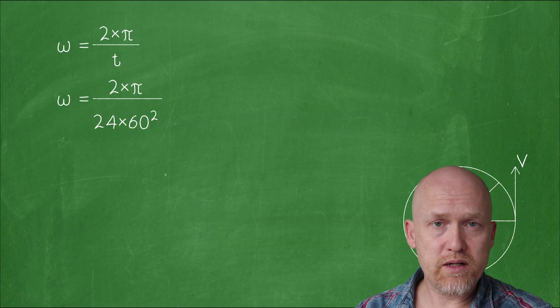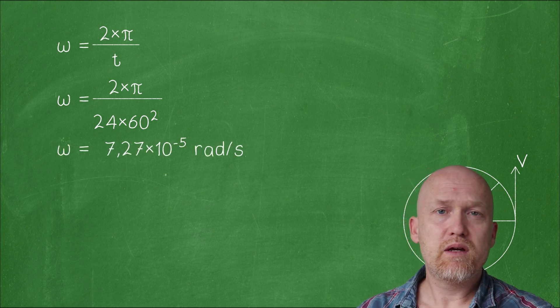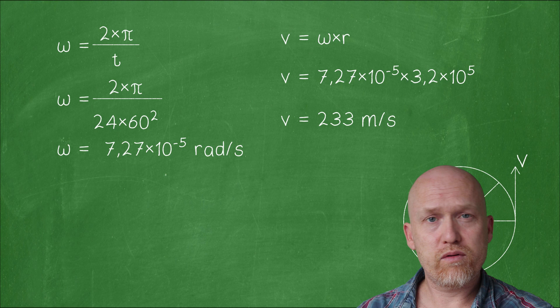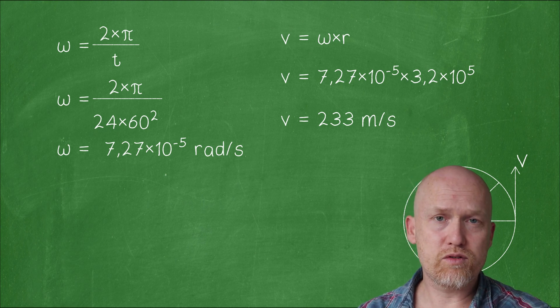The angular velocity is 2π over 24 hours times 60 seconds squared. That gives us a linear speed of 233 meters per second or 838 kilometers per hour.